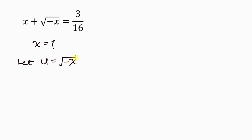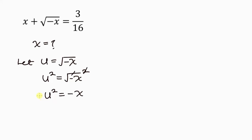Now, to get rid of this square root, we have to square both sides. So u squared will be equal to the square root of negative x, squared. The square cancels out the square root, so we have u squared equal to negative x. Multiplying both sides by negative, we get negative u squared equal to positive x. This is what we'll substitute into our original equation.